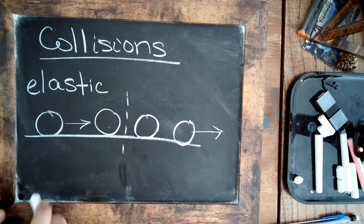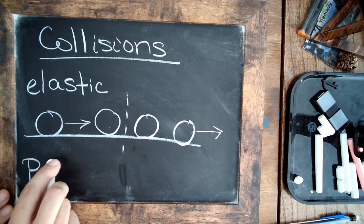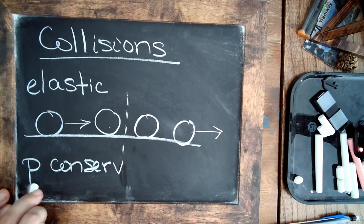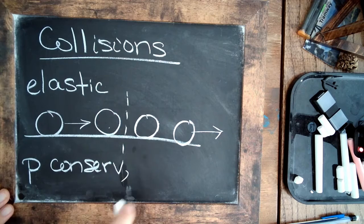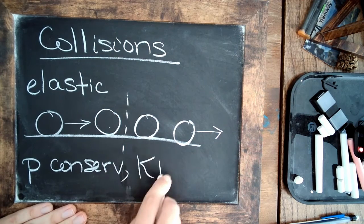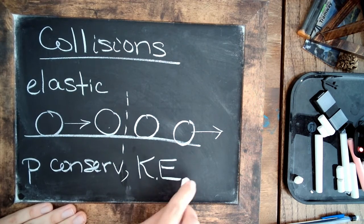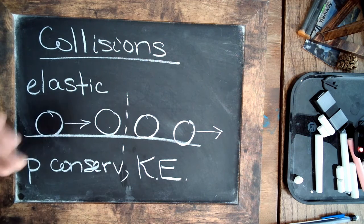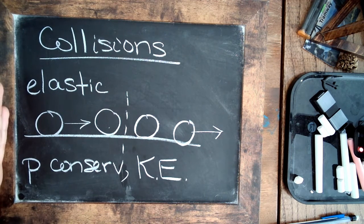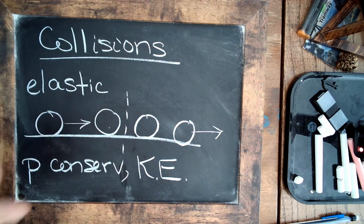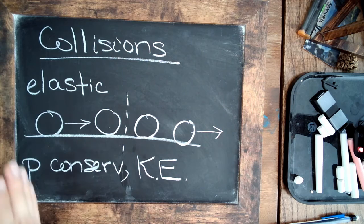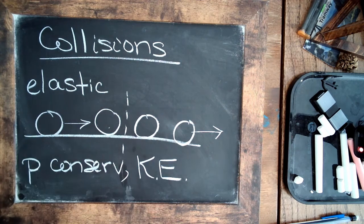So in this case, there's two things that are conserved. Momentum is conserved, momentum p, and kinetic energy is conserved. So those two expressions are conserved only in this ideal elastic collision case, in which some hard, rigid object does not deform and passes all of these two quantities from the first to the second object.